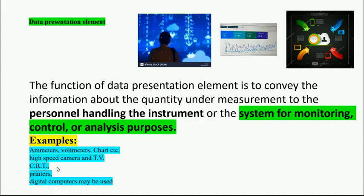It can be a meter, voltmeter, chart recorder, high-speed camera, TV, CRT that is cathode ray tube where we are seeing the voltage or current, printers, digital computers - anything can be used. So this is a simple explanation of the block diagram of the instrumentation system. This can be used for answering the question that comes in KTU university examination. Thank you, thank you so much.